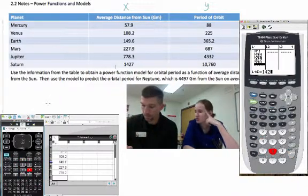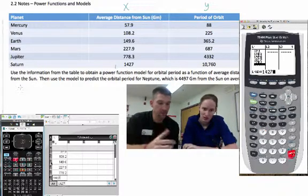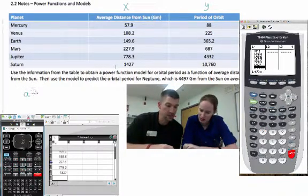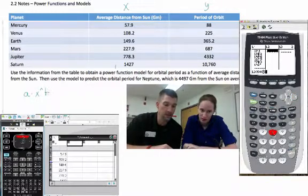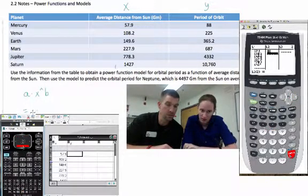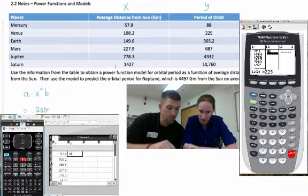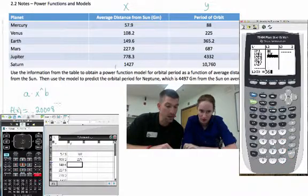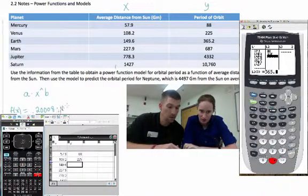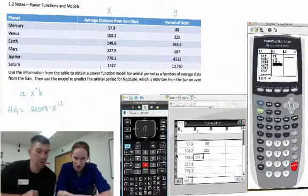It should pull up and show you—what does it show us? It shows all the columns and then it says it's a times x to the b, right. And a in this case is going to be 0.20008—how many zeros? Three zeros. Three zeros, okay. B is 1.49962.